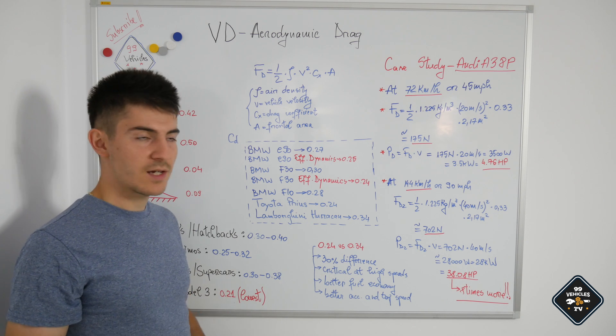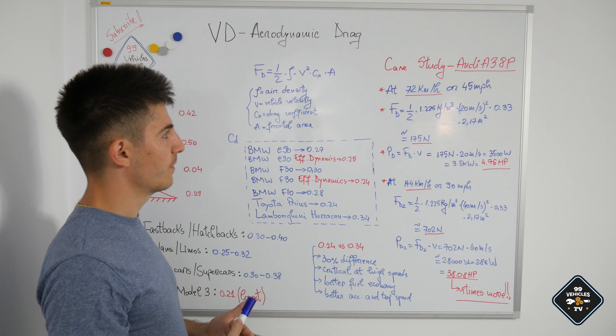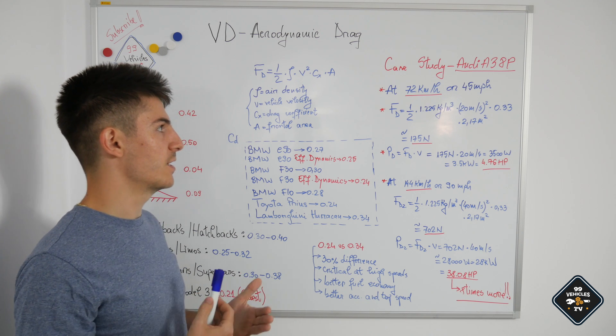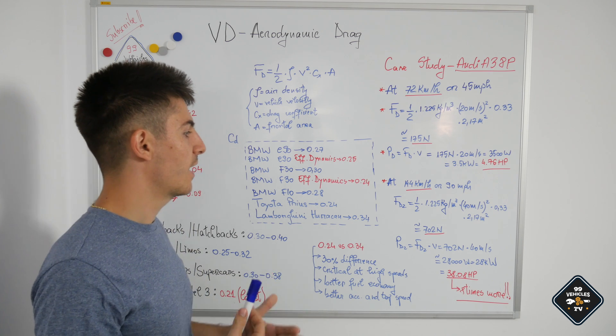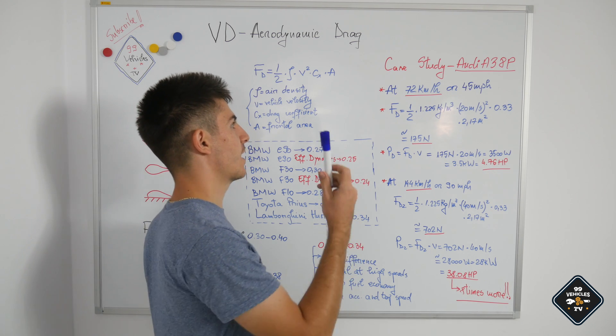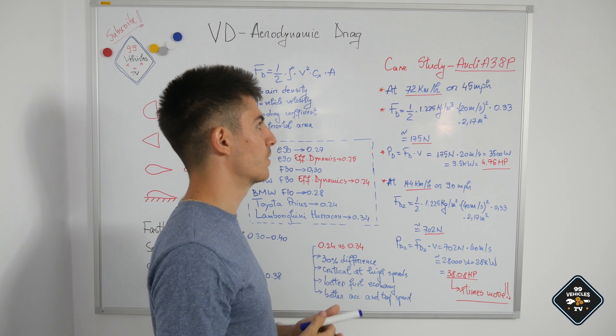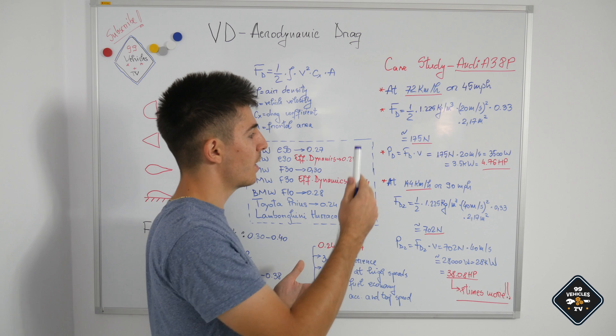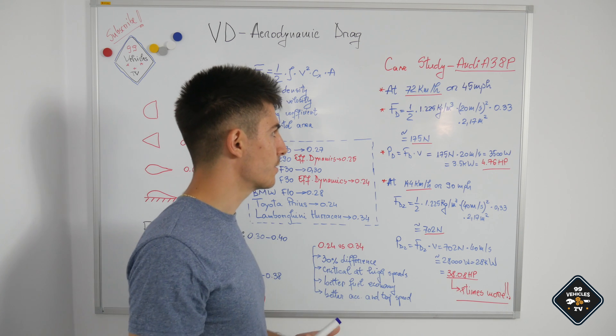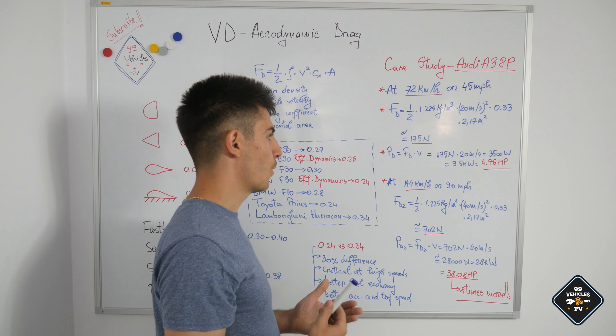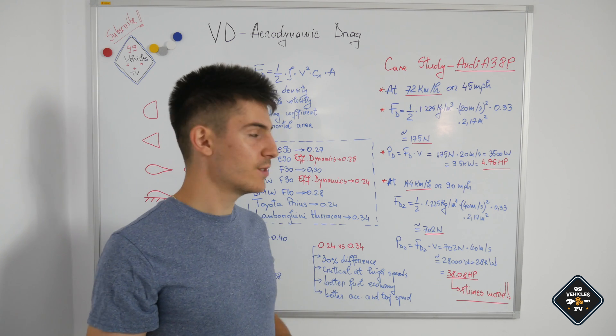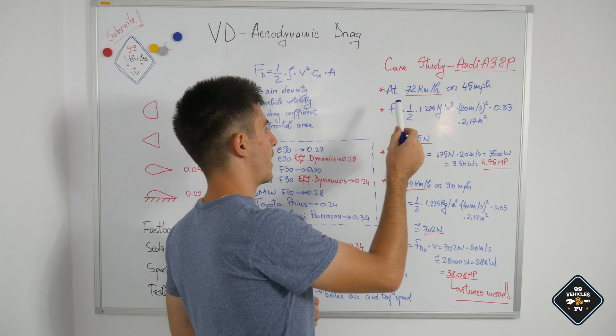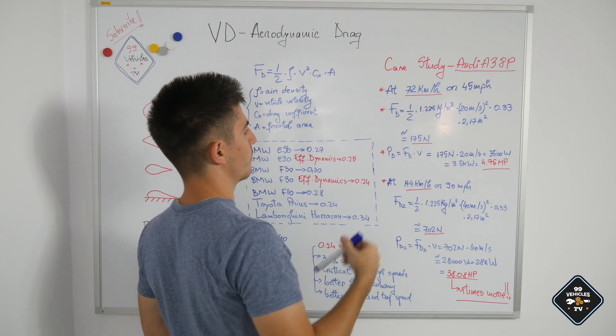Now I would like to make a small case study in which I have made a few calculations which involves my own car, my Audi A3 88 from 2004. I have made two different calculations at 72 kilometers per hour or 45 miles per hour or 20 meters per second. I am using metric units to compute the necessary power to overcome the aerodynamic drag forces.